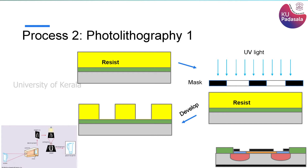That is the difference between positive and negative photoresist. In the next slide I have more on that. As you see, the yellow layer shown here is the photoresist, and I am assuming it is positive photoresist.